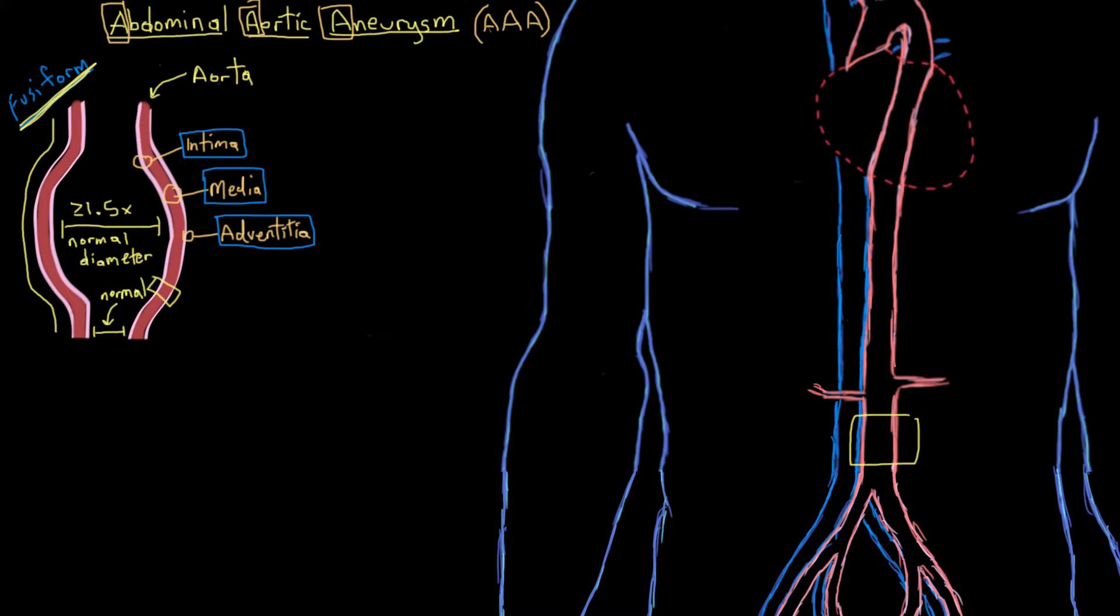Do they happen in a particular place in the abdominal aorta? Well, yeah, they do. AAAs most commonly occur below the renal arteries that supply the kidneys, and about 95% happen there. We'll touch on why that is in a little bit, but first let me tell you why we really don't want AAAs to occur.